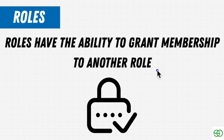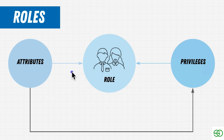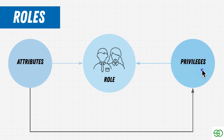Roles have attributes and privileges. Attributes are basically the same thing as a privilege in many cases — attributes define a privilege — but there are also privileges that aren't attributes. For example, you can have an attribute like 'superuser' that gives you the privilege to do whatever you want. But you can also give individual privileges to a role independently, such as read access, write access, or the ability to create databases. Attributes define certain privileges, but privileges can also be granted independently.